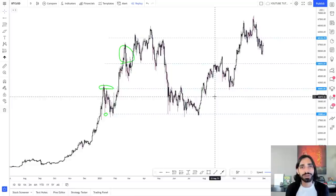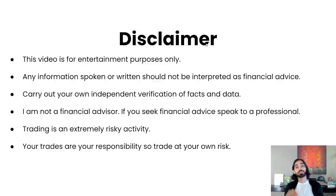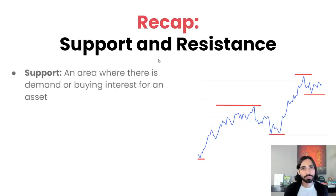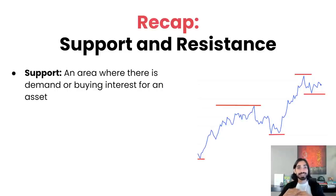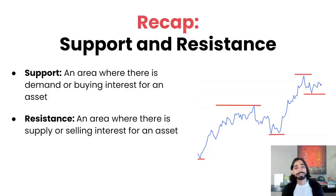Now please take a moment to read these disclaimers. Let's recap support and resistance — what are these levels? Well, support is an area where there is demand or buying interest for an asset. It means price hits that level, people want to buy, and therefore price goes up after it comes to that level.